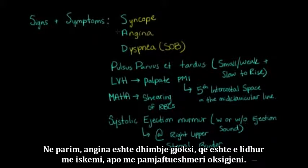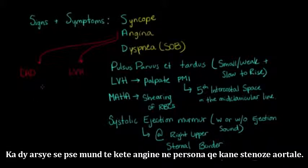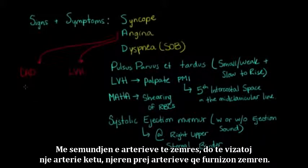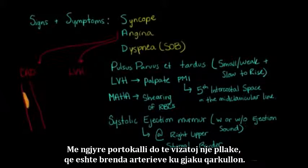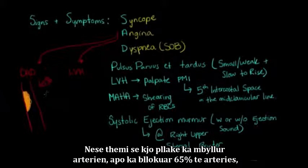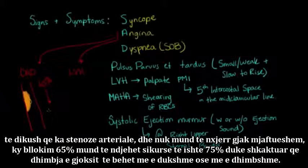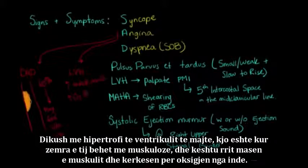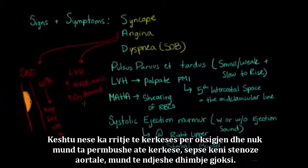To explain the angina: angina is chest pain related to ischemia, or lack of oxygen. There are two good reasons why you get angina in aortic stenosis. First, someone may have pre-existing coronary artery disease — if a plaque is occluding 65% of an artery, with aortic stenosis reducing flow, that blockage may effectively feel like 75%, causing chest pain. Second, with left ventricular hypertrophy, the heart becomes more muscular, increasing oxygen demand. If you can't meet that demand because of aortic stenosis, you can get chest pain.